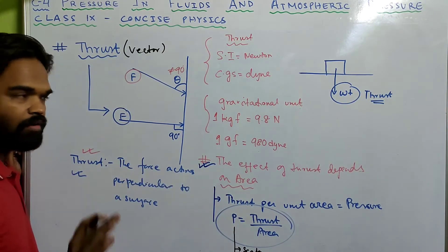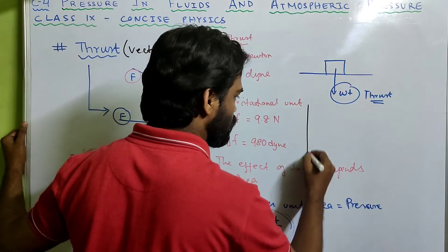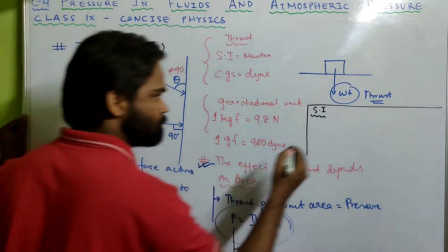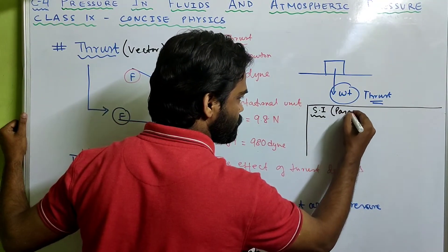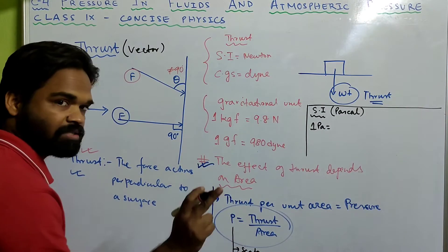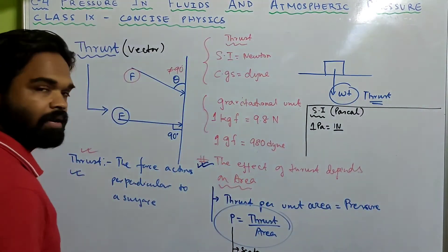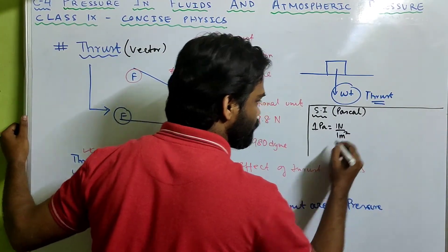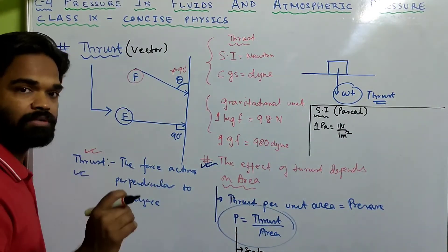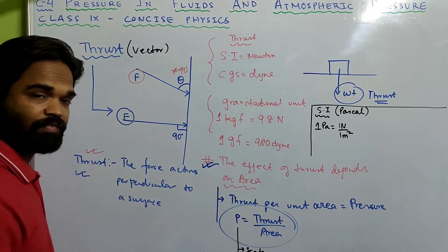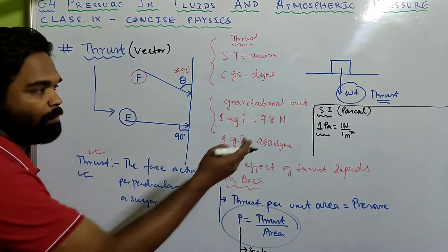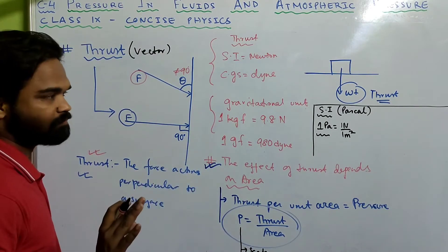Now let's talk about the SI unit of pressure. The SI unit of pressure is Pascal. One Pascal equals thrust divided by area — the SI unit of thrust is Newton, and SI unit of area is meter square. So we can define 1 Pascal as: when a force of 1 Newton acts perpendicular to a surface of area 1 meter square, the pressure developed is 1 Pascal. That is, 1 Pascal equals 1 Newton per meter square.